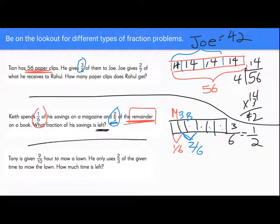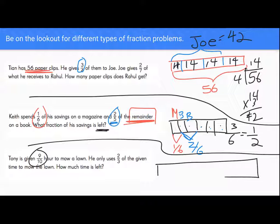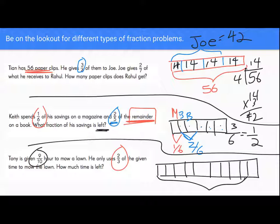So for this type of problem, if it says anything like the remainder or the rest, we want to be really careful to that. And in this last problem, it says Tony is given nine-tenths of an hour to mow a lawn. So immediately, right away, I'm going to draw my bar model. It has ten parts. He's given nine-tenths of an hour. So that's the time that he's given, those nine-tenths. He only uses two-thirds of them to mow the lawn.